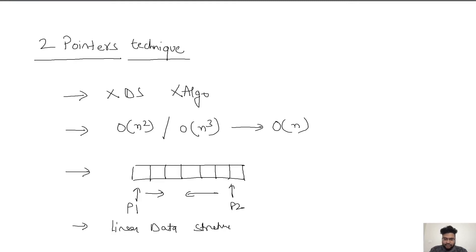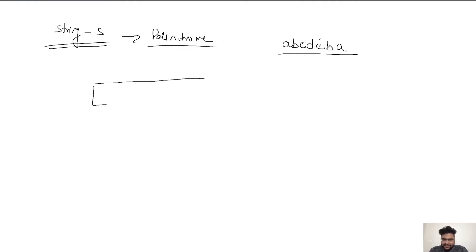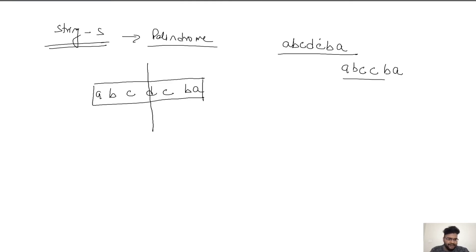This creates a good foundation for understanding two pointers. Let's try to understand it via a simple example. Suppose we are given a string S and asked whether it is a palindrome or not. For example, 'a b c d c b a' is a palindrome. The property of a palindrome is that it should be symmetric around the center. The string 'a b c c b a' is also a palindrome — with symmetry lying at the center point.